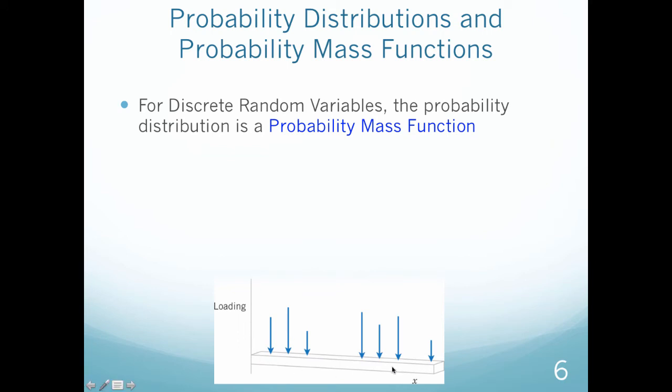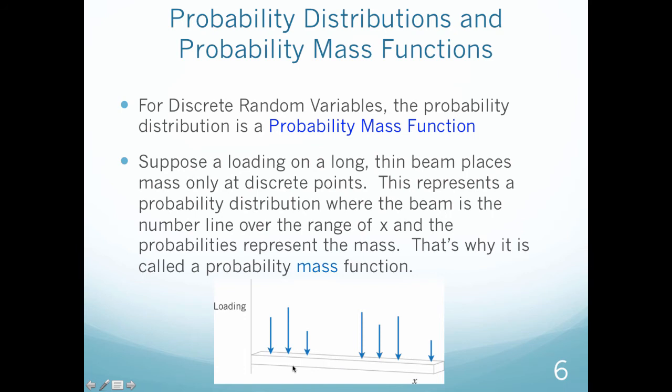This picture or this graphic is in your book, and I actually really like it. Suppose we have a loading on a long, thin beam. So this is like a long, thin beam. And I have these loadings, or these arrows. So these arrows take place at discrete points, meaning very countable or integer points on this line. This represents the probability distribution, where the beam is my number line over a range of x values.